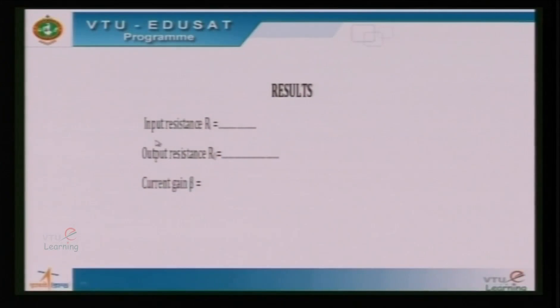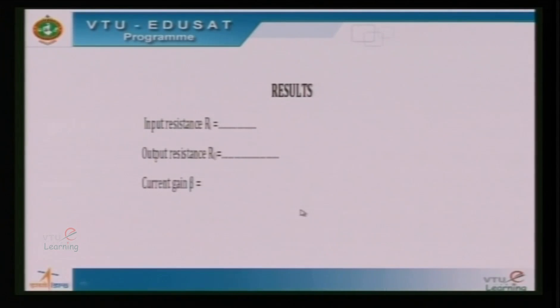The slope of this linear graph gives the current amplification factor beta, which is in the range of 100 to 200. Results and calculations are tabulated. The results of this experiment are: input resistance of the order of 500 ohms, output resistance of the order of 2 to 5 kilohms, and current amplification factor (current gain) beta is approximately 200.